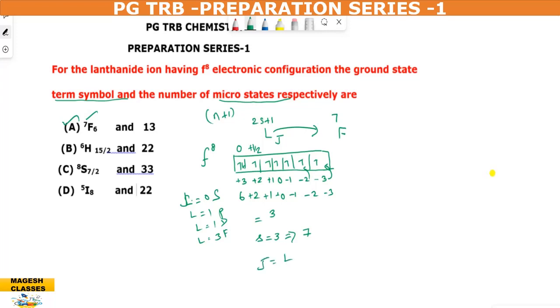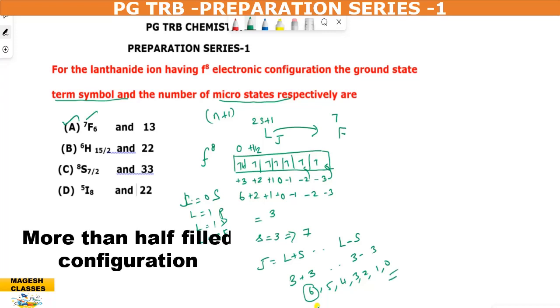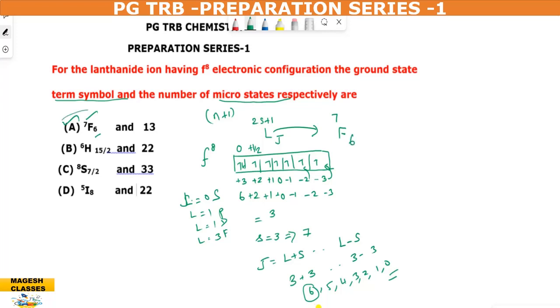And J value is L minus S. L value is 3, S value is 3. Now 3 minus 3. So 6 will start: 6, 5, 4, 3, 2, 1. These are different J values. In this case we have highest rate. Electronic configuration is more than half-filled, highest value. Less than half-filled, lowest value. So in this case, you have a value of J equals 6. So we have 7F6.